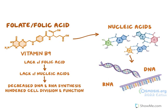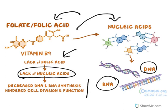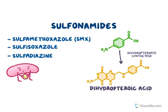The basic use of sulfonamides is that they act as antimetabolites — they interfere with the metabolism of folic acid. Folic acid is responsible for the synthesis of nucleic acids like DNA and RNA. When folic acid is not sufficiently synthesized, it results in lack of nucleic acid, decreasing DNA and RNA synthesis, and reducing cell division and function.